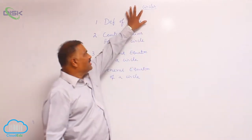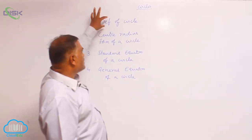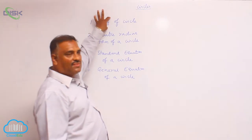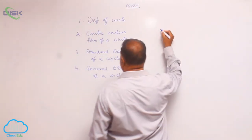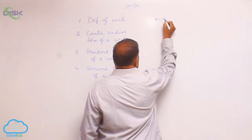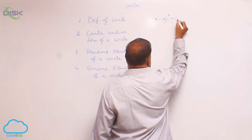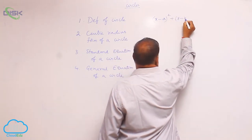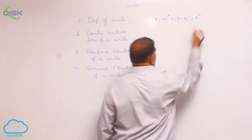Today's topic is circles. First, we discuss the definition of a circle. We will see the equation: x minus a, whole square, plus y minus b, whole square, is equal to r square.